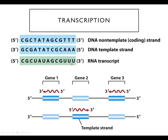Because the RNA transcript is complementary to the template strand, and the non-template strand is also complementary to the template strand, the non-template strand and the RNA transcript will have the same sequence — with the exception of uracils in place of thymines, since uracil is found in RNA and thymine is found in DNA. So sometimes the non-template strand is referred to as the coding strand, because it has the same base sequence as the RNA transcript, replacing T's with U's.